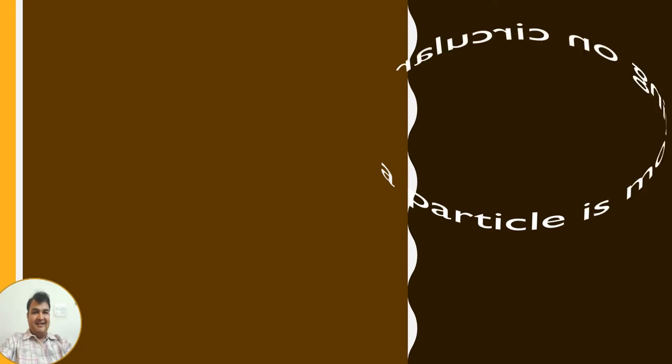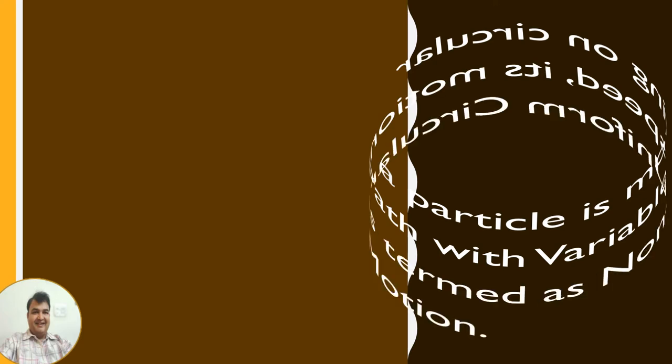If a particle is moving with variable speed along a circular path, its motion is termed as non-uniform circular motion. A particle moving along a circular path with variable speed is termed as non-uniform circular motion. We summarize: the particle has to move with variable speed.